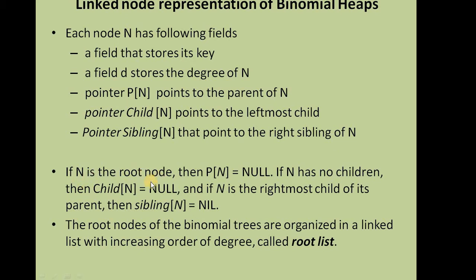If the node is the root node, then the parent pointer will be null, as there is no parent for the root node. If the node has no children, then the child pointer will be null. And if there is no right sibling, then the sibling pointer will also be null. The root nodes of the binomial tree are organized in a linked list with increasing order of degree — this is called the root list.